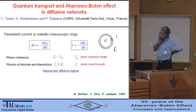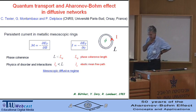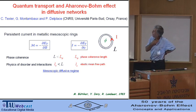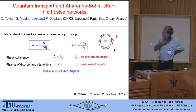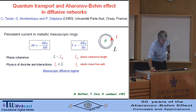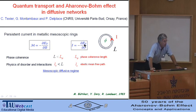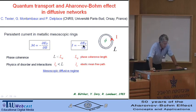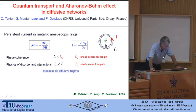The motivation comes back to the problem of persistent current. As we have seen this morning from Joe Imrie's talk, this persistent current is a very simple quantity — it's a derivative, the sensitivity of the energy or free energy with respect to the magnetic flux, and it's a property of this isolated ring.